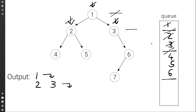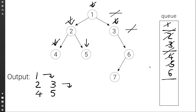We go back to the queue and we set current to the front of the queue, so four. We pop the front of the queue, we print the four, then four doesn't have children, so we're done with it. We go back to the queue, we set current to five. We pop the front of the queue, we print the five, and five doesn't have children. We go back to the queue, set current to six. We pop the front of the queue, we print the six.